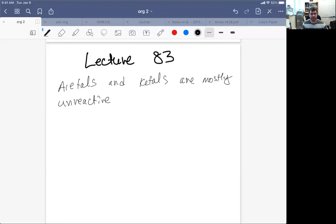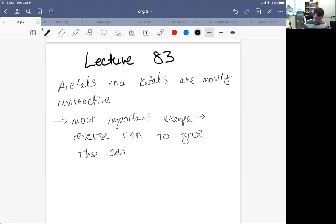So if I'm talking about the chemistry of acetals and ketals, maybe I'm not off to the most interesting start. It turns out that for the most part, what we're going to see these things do is the reverse reaction of their formation. The most important one, reverse reaction, and that will give rise to the carbonyl to give the carbonyl from which they were made.